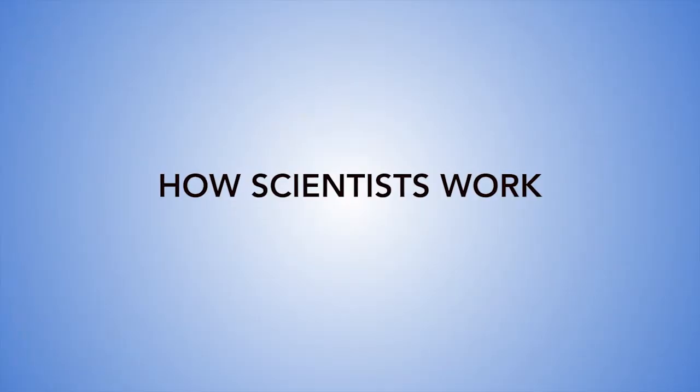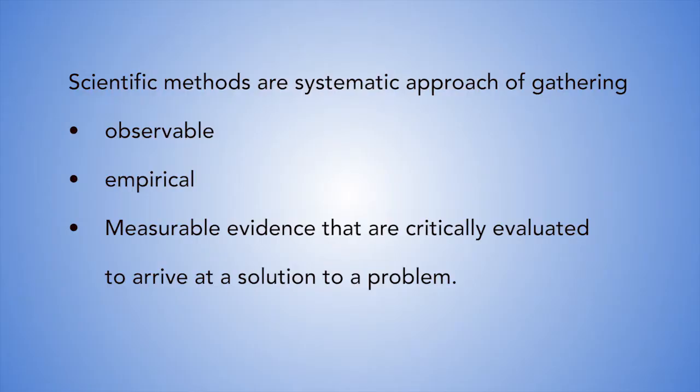How do scientists make enquiry? Now let's focus on how scientists work. Conducting a scientific investigation or enquiry involves a series of steps, what we refer to as the scientific method. The scientific method is a systematic approach of gathering observable, empirical, or measurable evidence that are critically evaluated to arrive at a solution to a problem.